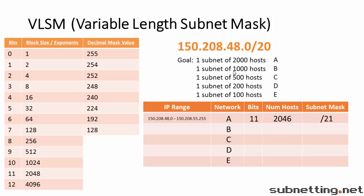Our next network needs 1,000 hosts. The lowest power of 2 is 1,024, so we need 10 bits for that. The number of hosts will be 1,022, and our subnet mask is 32 minus 10, or slash 22. Calculating the block size in the third octet, counting from 16 to 22, our block size is 4. Our starting IP is 150.208.56.0. We're going to add 4 to the third octet, so 56 plus 4 is 60 — that's the start of the next network, so this one ends at .59.255.